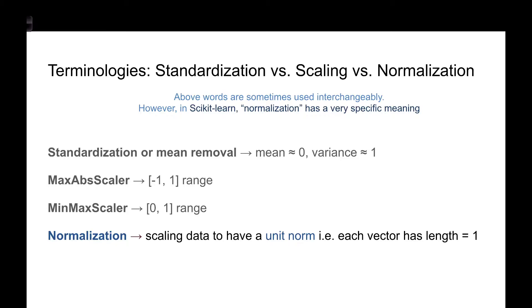These methods are sometimes also called normalizing the data, but when we are specifically talking about scikit-learn, normalization has a different meaning. Here it means that we are converting the data such that it has a unit norm — that is to say, the vector at each data point has a length of one. We'll look into that in more detail as we go through the following slides.